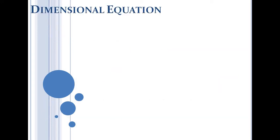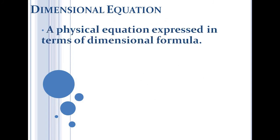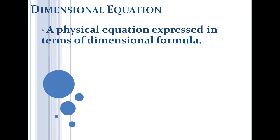Now let's look at the dimensional equation. There are different physical equations such as F = ma, v² = u² + 2as, and so on. Any such physical equation expressed in terms of dimensional formulas is called a dimensional equation.